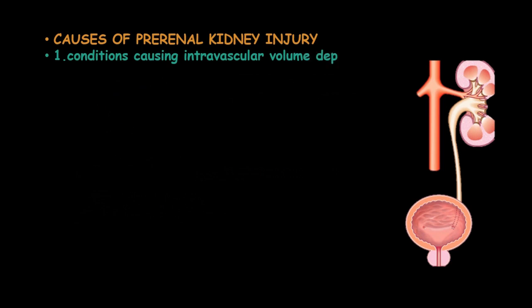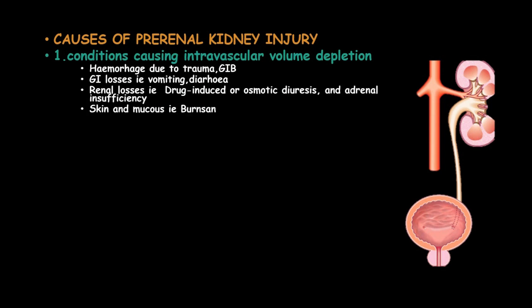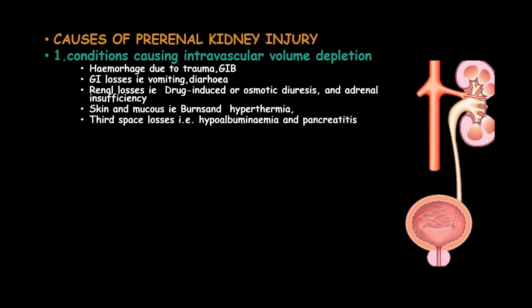The causes of pre-renal kidney injury include conditions causing intravascular volume depletion such as hemorrhage due to trauma or gastrointestinal bleeding, gastrointestinal losses such as vomiting and diarrhea, renal losses like drug-induced or osmotic diuresis and adrenal insufficiency, skin and mucous membrane losses such as burns and hypothermia, and third-space losses such as hypoalbuminemia and pancreatitis.